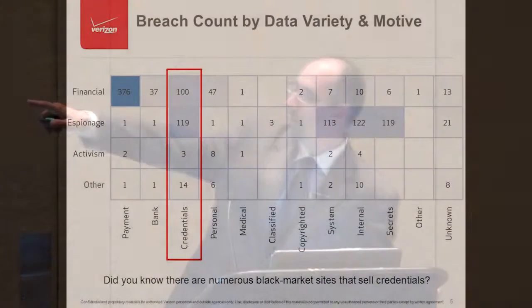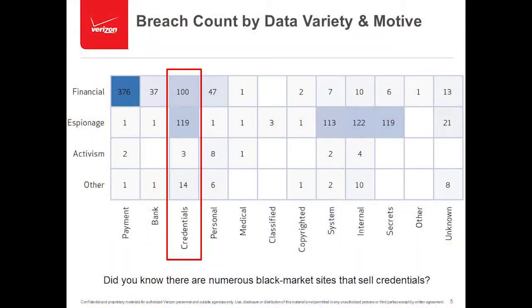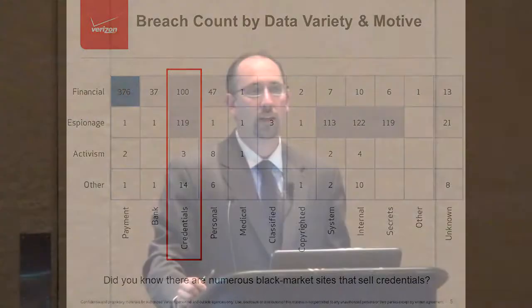One of the interesting things is that credentials cross over into the two big categories of both financial motivation and espionage, which tells us that credential information is extremely valuable across a variety of different motivations — it's not just limited to one. And when you look at the espionage-related category, it also cuts across a lot of different data varieties.